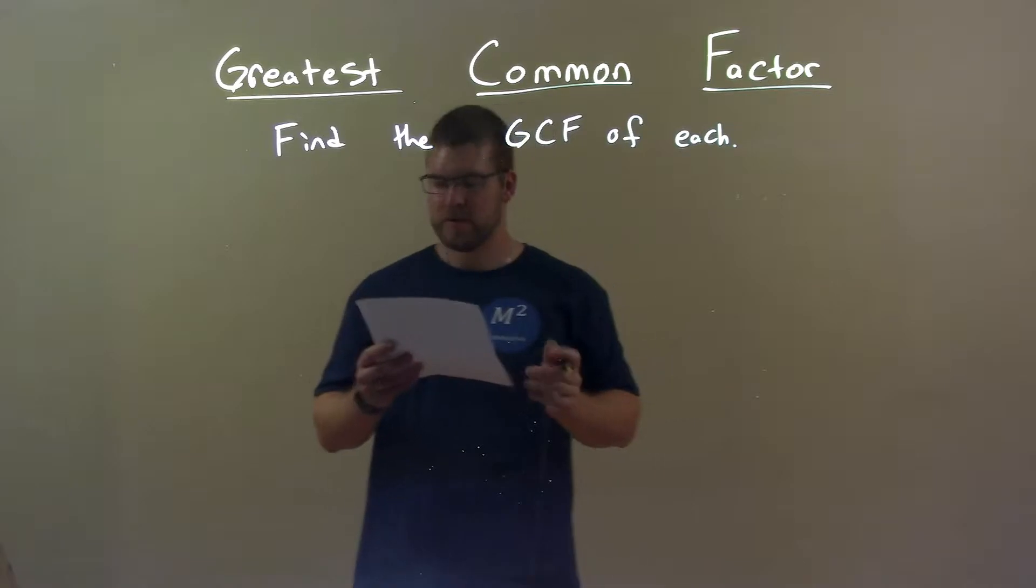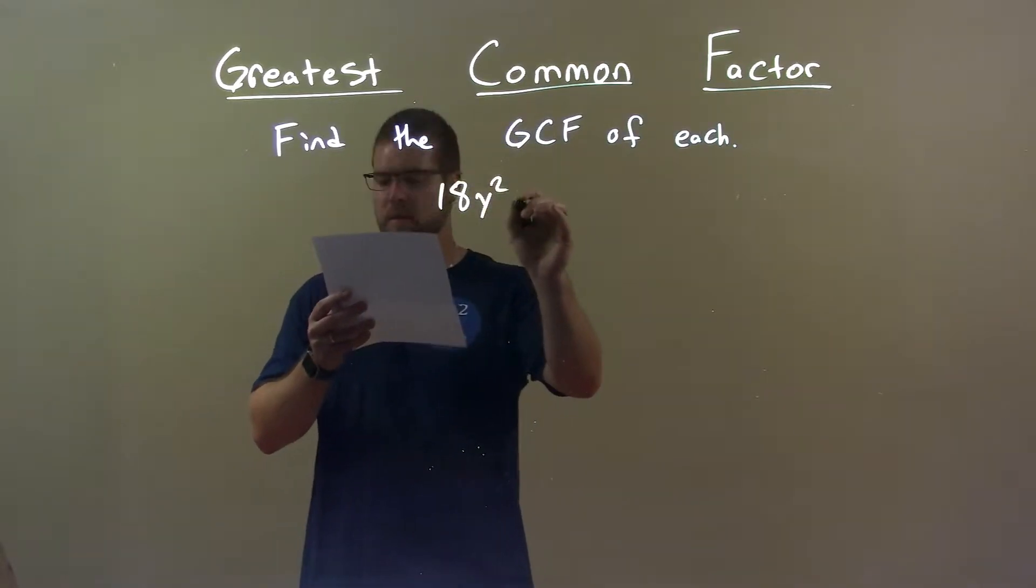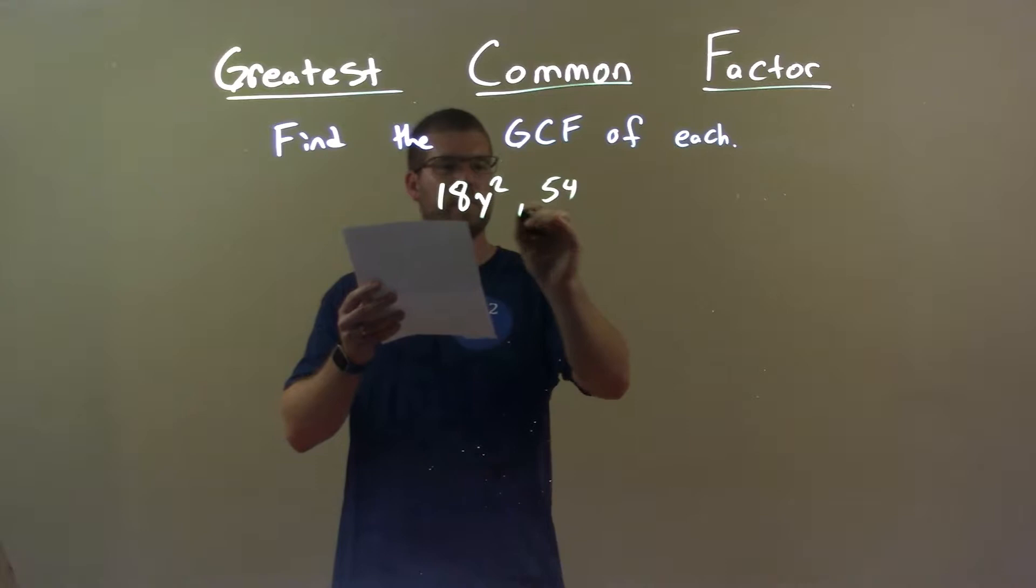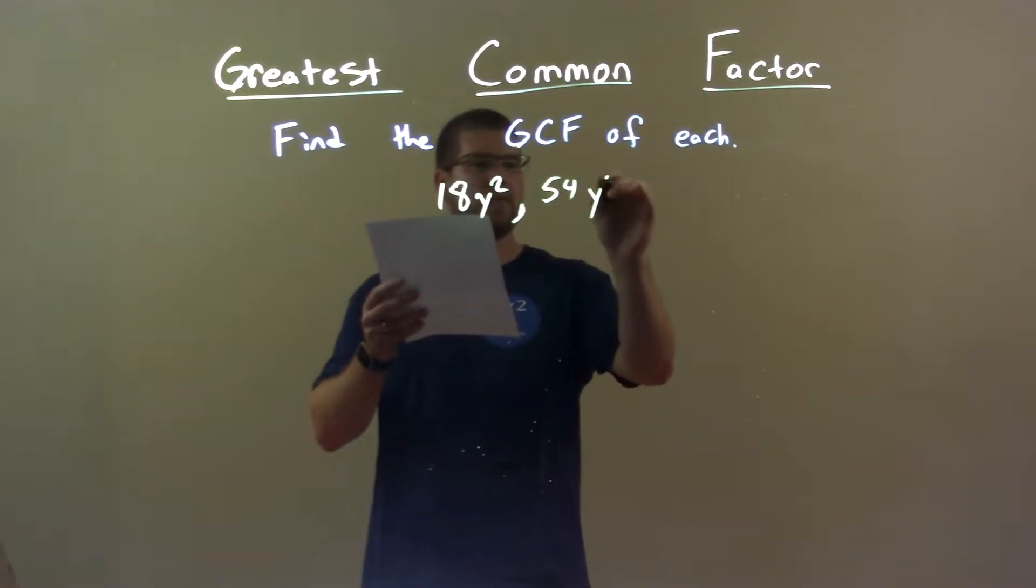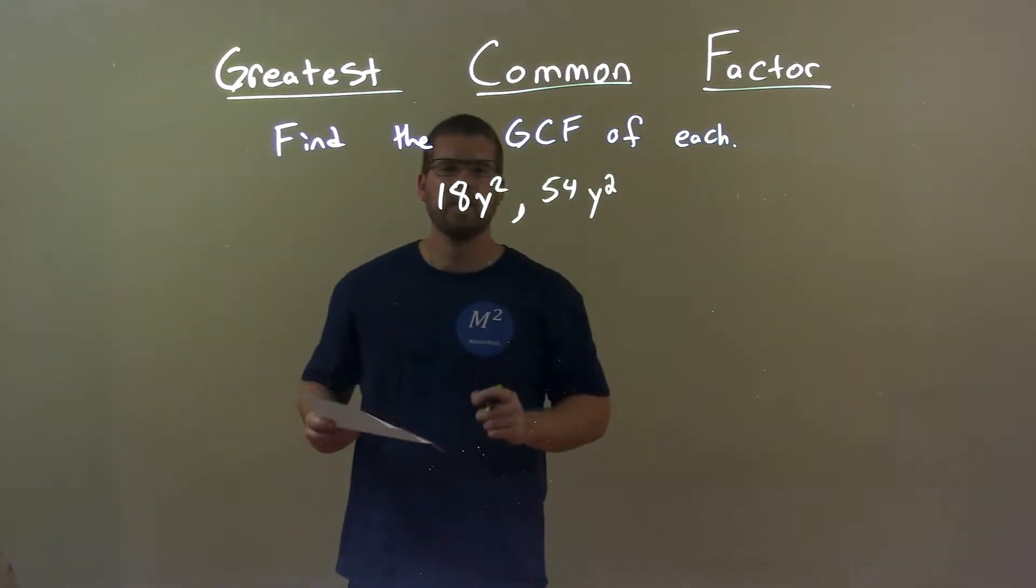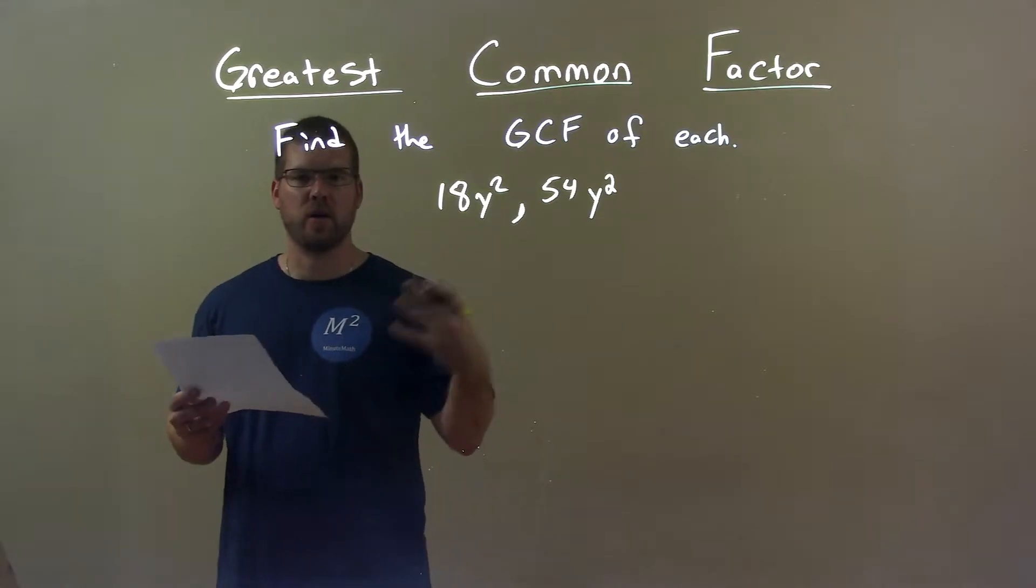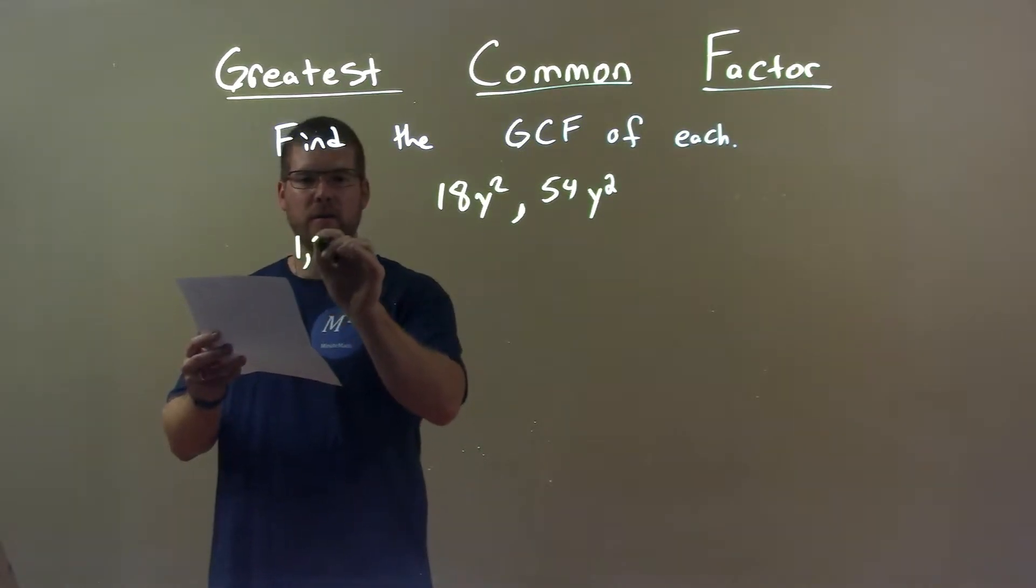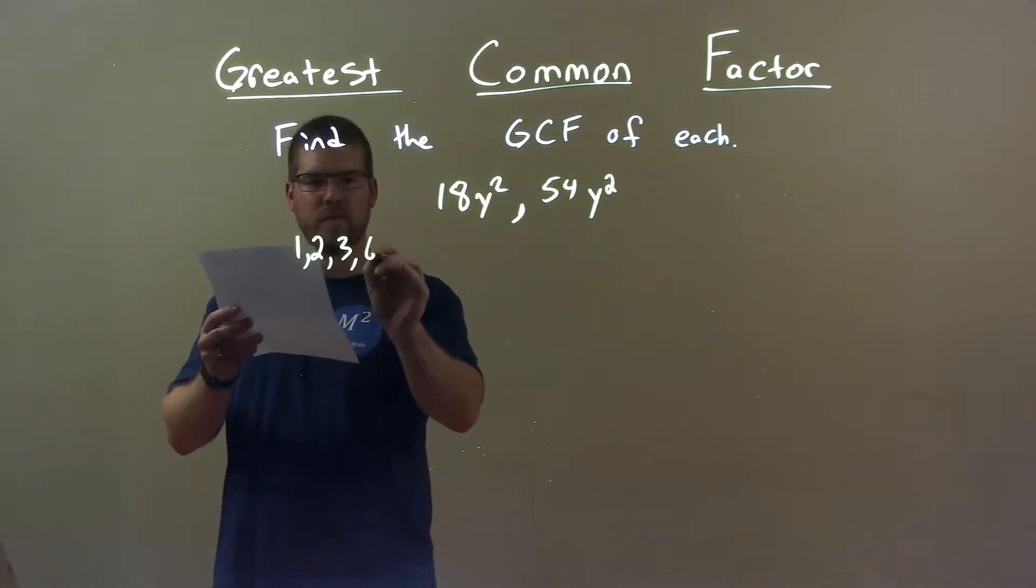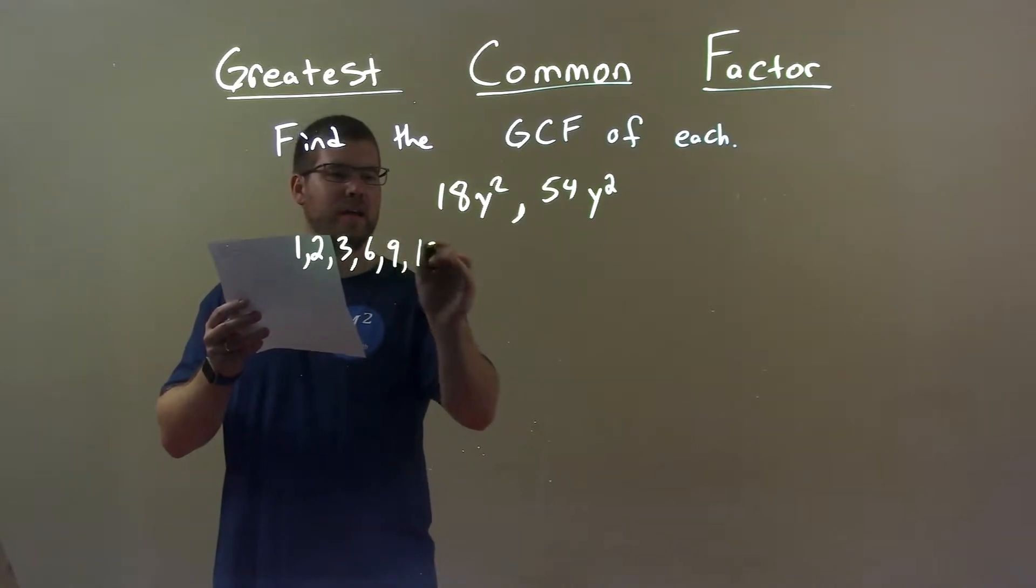So, if I was given these numbers, 18y squared and 54y squared, okay? Well, first I take the smaller of the two numbers and find all the factors, and those are 1, 2, 3, 6, 9, and 18.